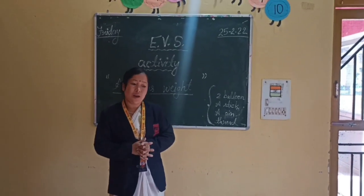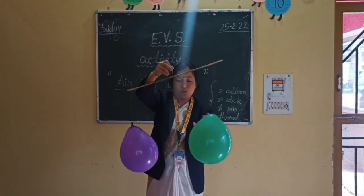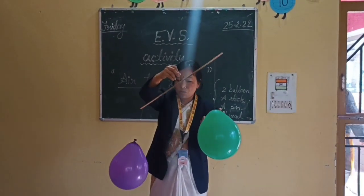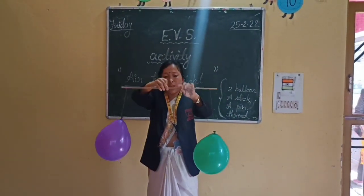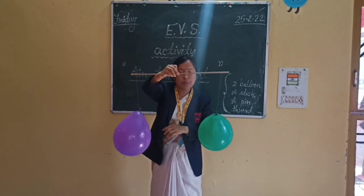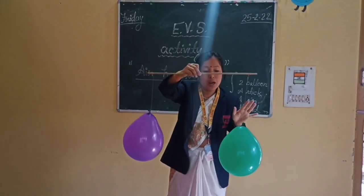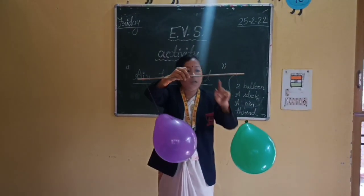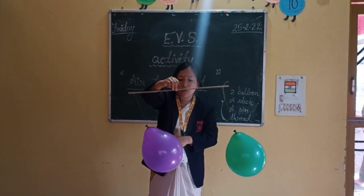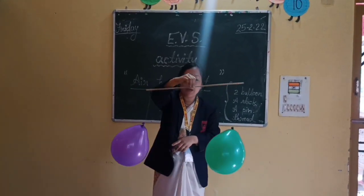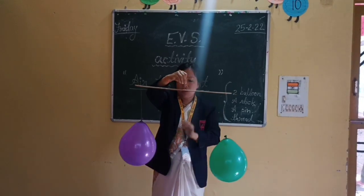Let's start our activity. Here are two balloons. These two balloons are equal. Yeh dono balloons kya hain? Equal. And the stick is balanced — bilkul balance hai.